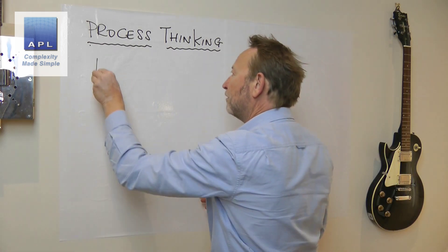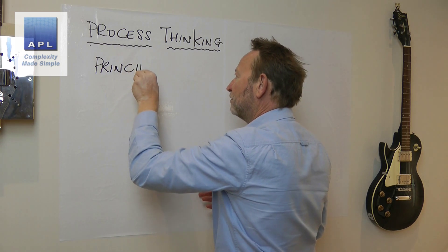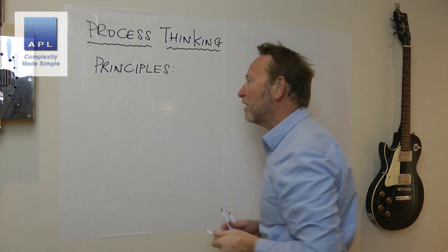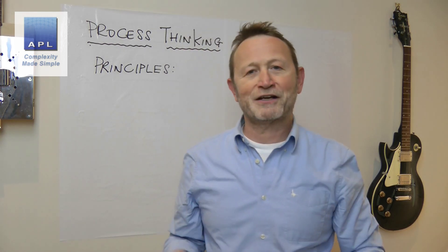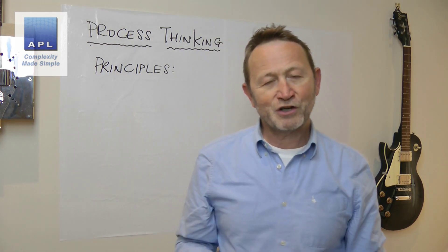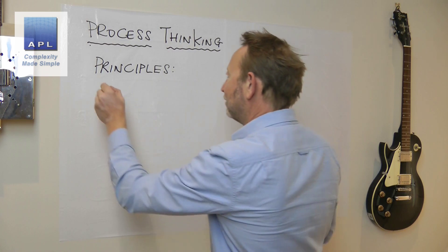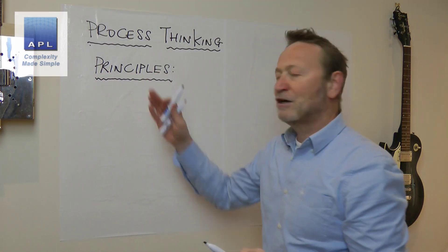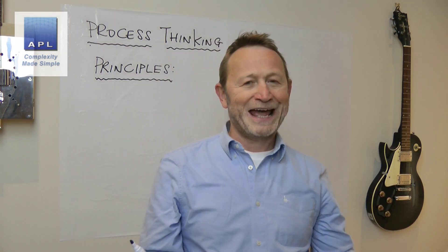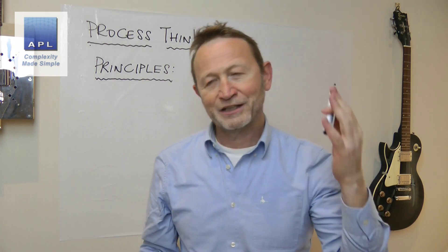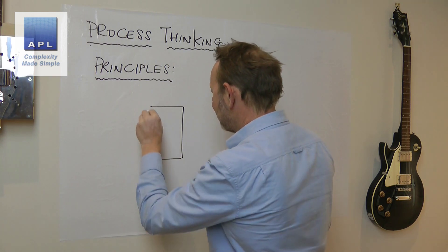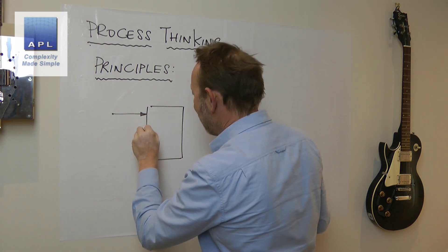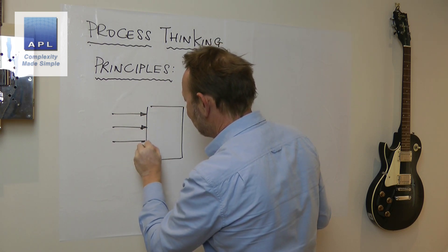Most people think that process improvement is all about the toolkit. We look at Toyota and say, 'What's the world-class way of problem solving?' — it's the A3 technique, it's the Five Whys technique, and all of that kind of good stuff. Well, as a matter of fact, forget the tools. Understand principles, and you can pick whatever tool you want out of any toolkit to solve the problem in front of you.